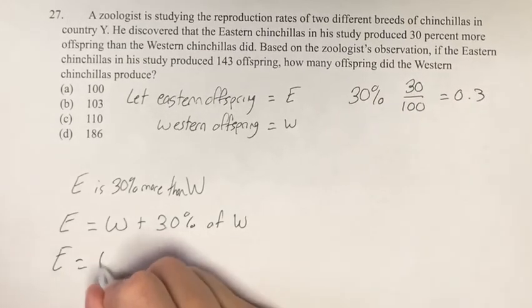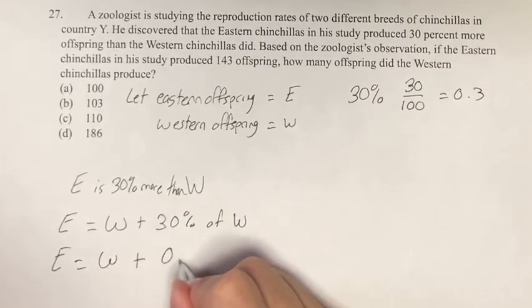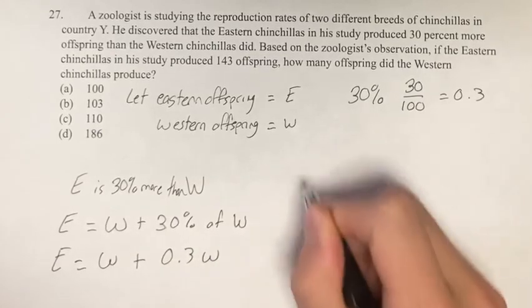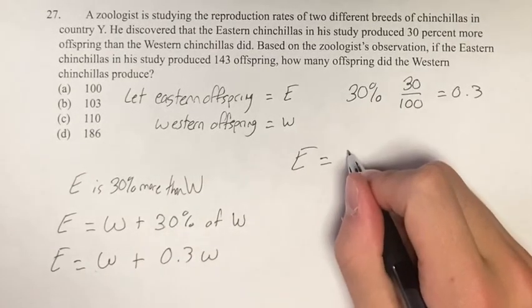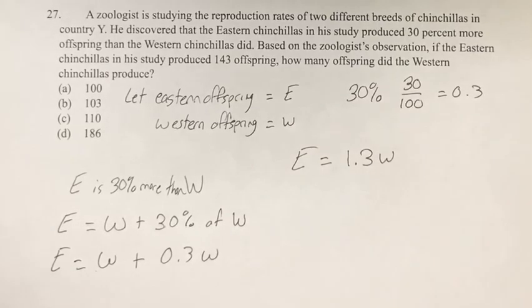So this is W plus 0.3W. Therefore, E is equal to W plus 0.3W, which is 1.3W.